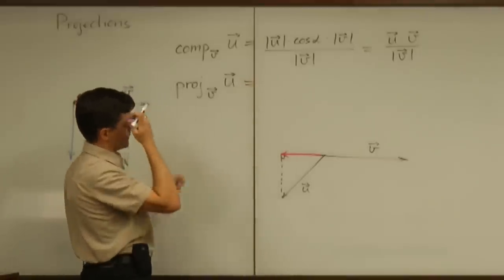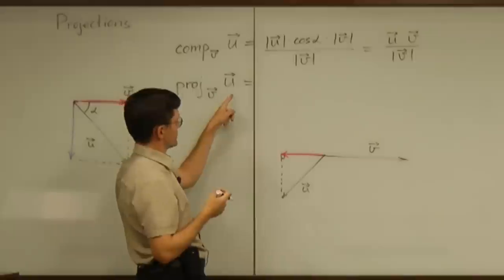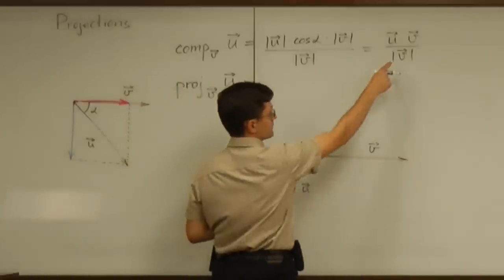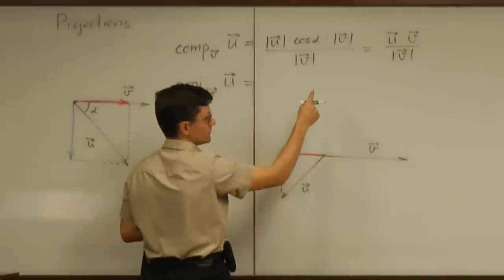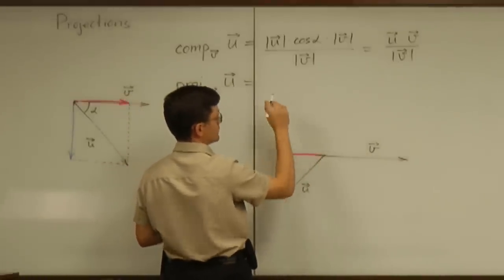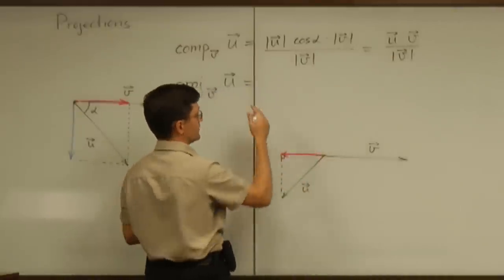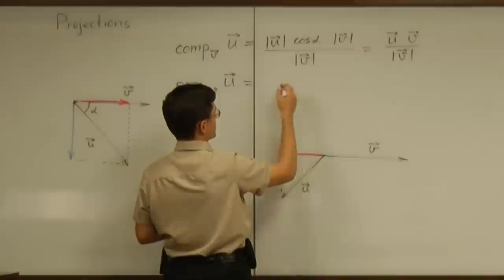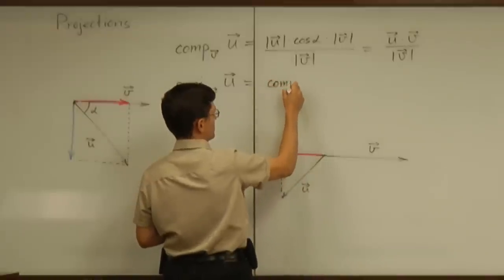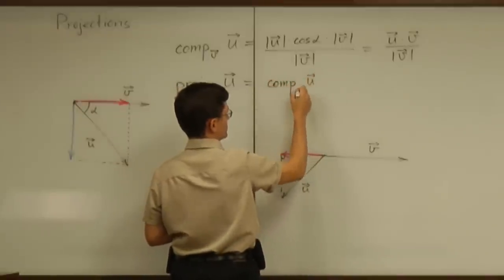The way I memorized the formula is that this projection has that magnitude in some sense, although this number is possibly negative. But I would start with the component of u with respect to v.